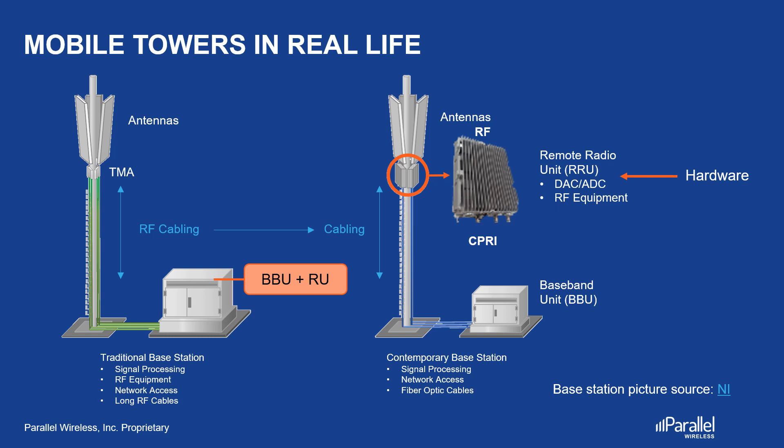We can say that this contains hardware. At the bottom, we would have the baseband unit, or BBU, that would sit in the cabinet. This contained hardware as well as software. While in this picture it shows the BBU driving one RRH, in reality a single BBU would be able to drive possibly all the RRHs that belong to the same vendor and operator.